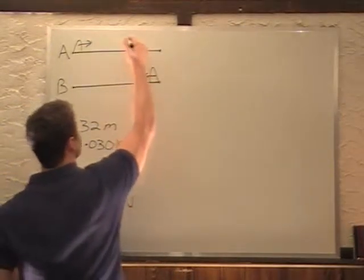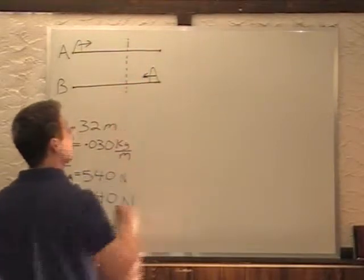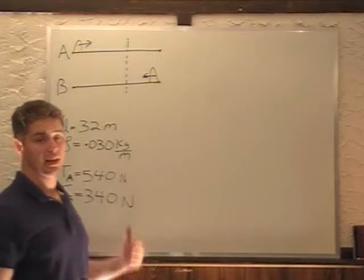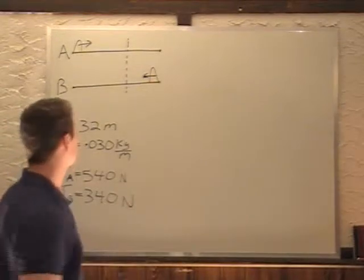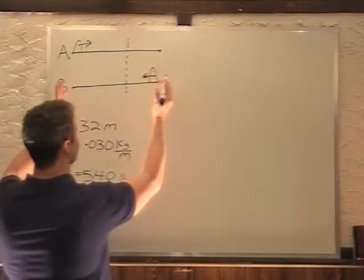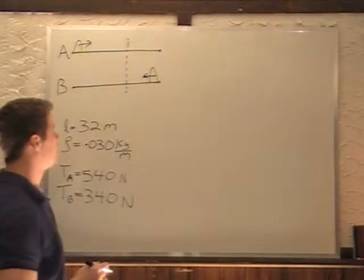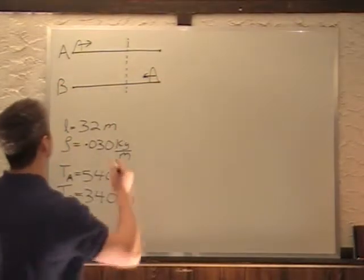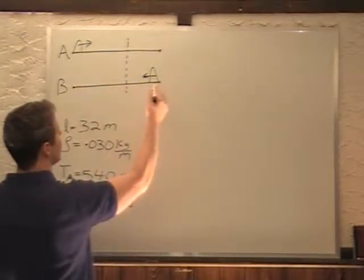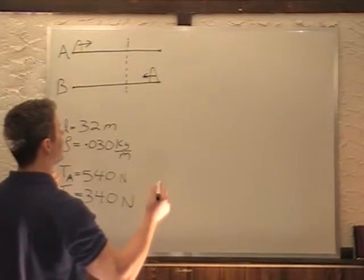They're going to pass at some point and we want to know how much time has passed when they cross each other. So we can tell that this whole thing is of length 32 meters. We're going to say the length traveled by A plus the length traveled by B is going to be our full length.